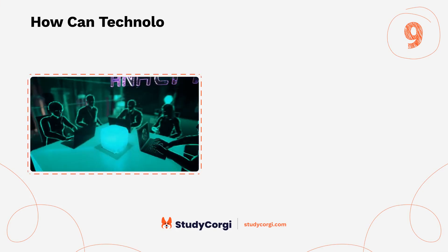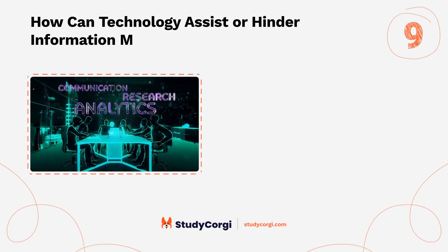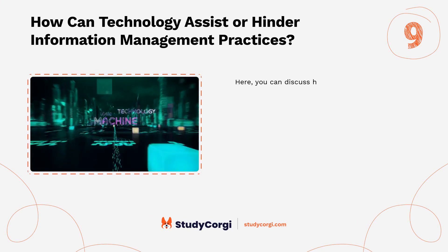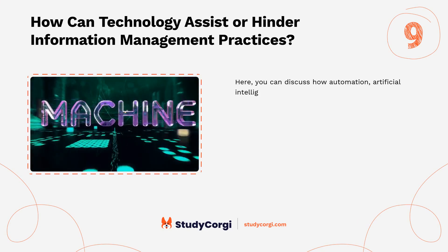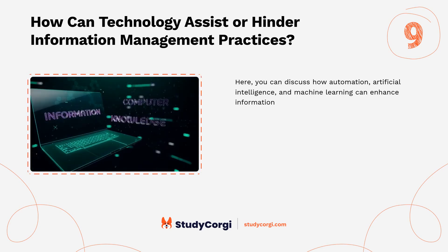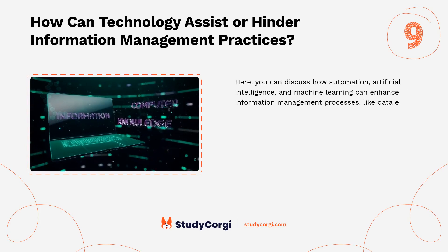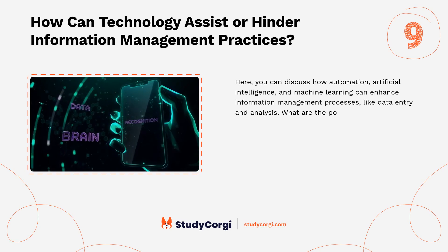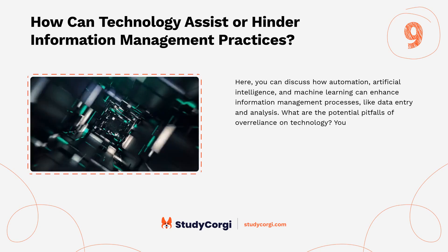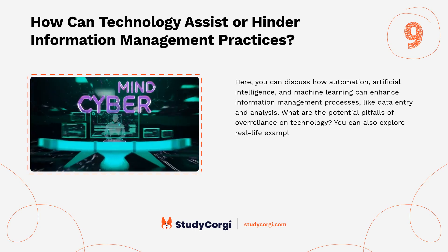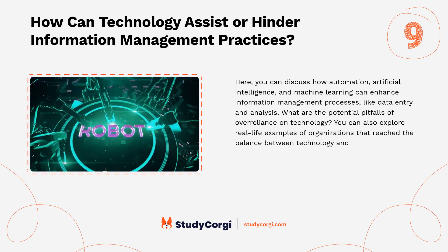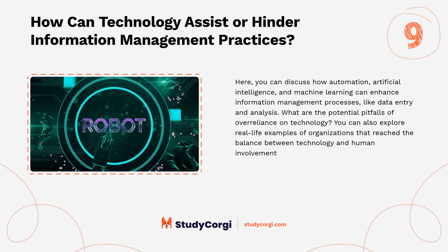How can technology assist or hinder information management practices? Here you can discuss how automation, artificial intelligence, and machine learning can enhance information management processes like data entry and analysis. What are the potential pitfalls of over-reliance on technology? You can also explore real-life examples of organizations that reach the balance between technology and human involvement in information management.